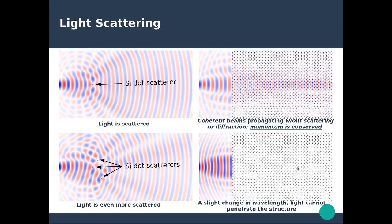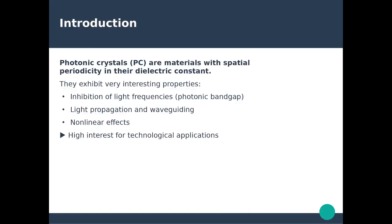This is what defines a photonic crystal and its interesting properties. Photonic crystals are materials that exhibit a spatial periodicity in their dielectric constant — in this particular case, silicon and air. They exhibit various interesting properties: the inhibition of light at certain frequencies resulting from the photonic band gap, very interesting light propagation with guiding properties and conservation of momentum, as well as non-linear effects.